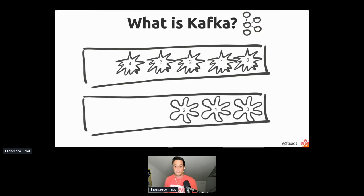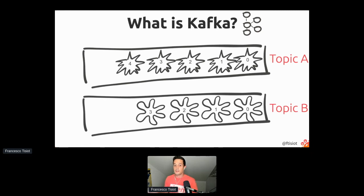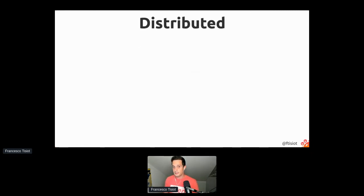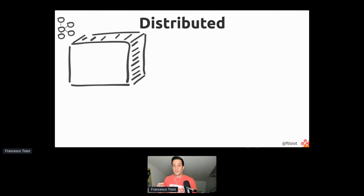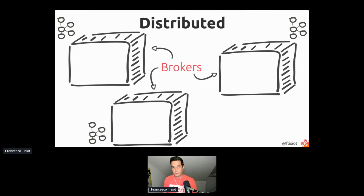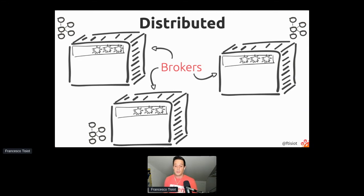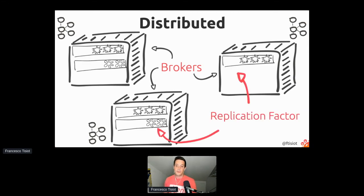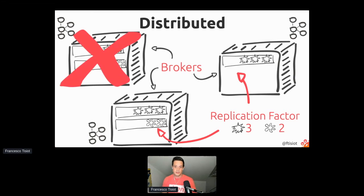Once I write event zero in the log, it will always be like that. If something changes the reality of event zero, I will store it as a new event in my log. Kafka can handle multiple logs of multiple event types, called in Kafka terms topics. Kafka is also resilient because it's a distributed system — when you create a Kafka instance you are actually creating a set of nodes, called brokers. The log information is stored multiple times across the cluster following a setting called replication factor.